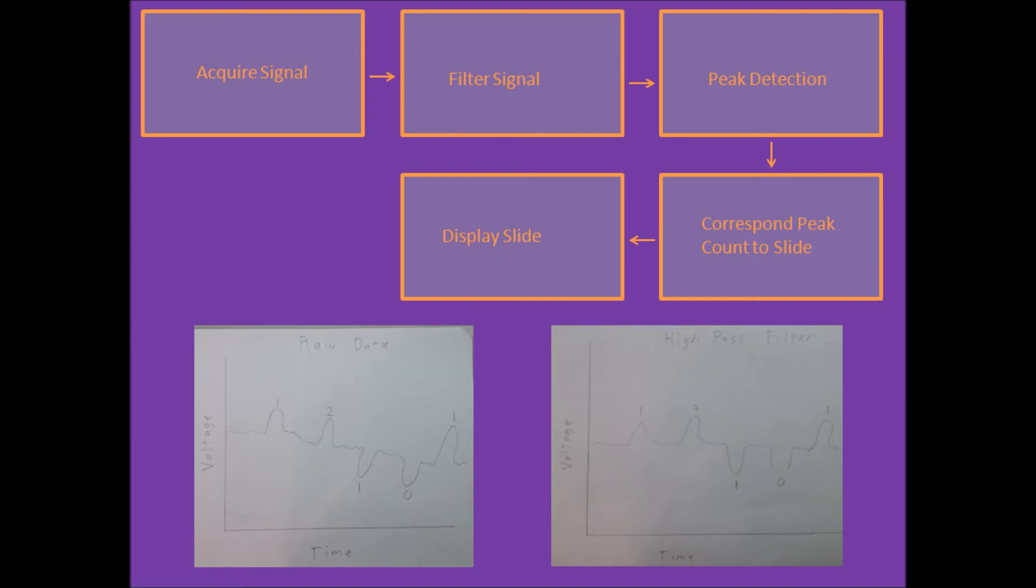After the peaks are detected and sent to MATLAB, we need to correspond them to the slides we want to display. As you can see, above each of these peaks is a number. This represents the slide count. Assuming we initialize our slide count to zero, the first peak will add one to the count since it is positive, and the third will subtract one since it is a negative peak. The slide count corresponds to the slide you wish to display as follows. A slide count of zero will be the title slide, slide count one will be the second slide, and so on.